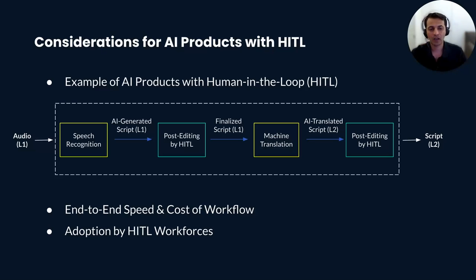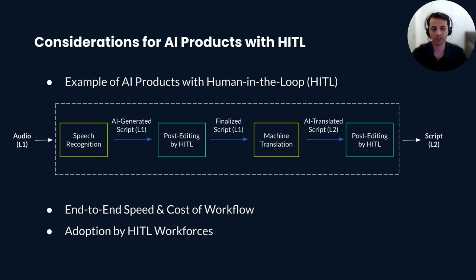Let's go through one example together. Our AI product generates a translated script of an audio file. We receive audio in the original language — English, for example — as input, and the output of our product is a translated script in the target language, like French.